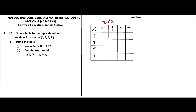Starting to fill in the table: 1×1=1, and 1 in mod 8 is 1. Then 1×3=3, which in mod 8 is 3. 1×5=5, which in mod 8 is 5. 1×7=7, which in mod 8 is 7. Then 3×1=3, which in mod 8 is 3. 3×3=9, and we need to find 9 in mod 8.